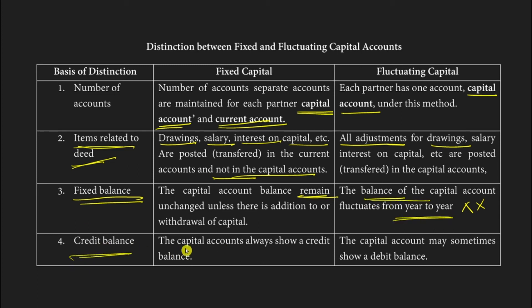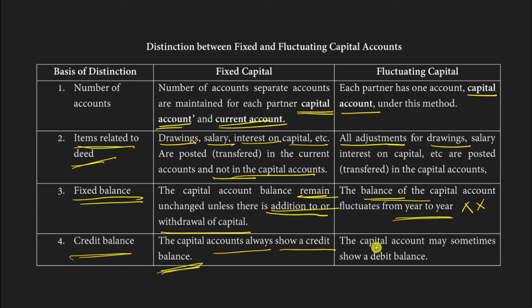In the fixed capital method, the capital account will always show a credit balance, because the balance doesn't change unless capital is withdrawn or additional capital is introduced. In the fluctuating capital method, you can't predict the balance — it can fluctuate between a credit balance and a debit balance depending on the transactions, sometimes showing a debit and sometimes a credit balance.